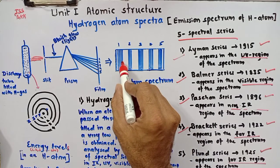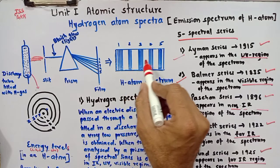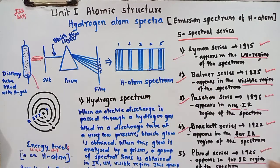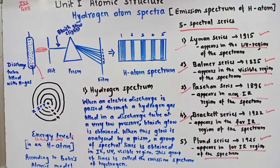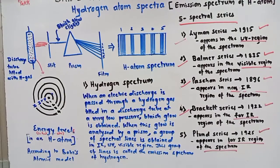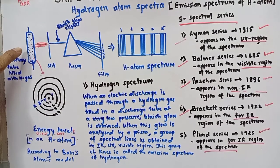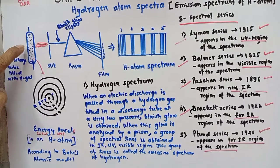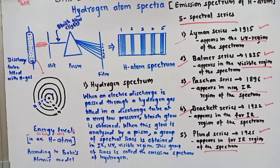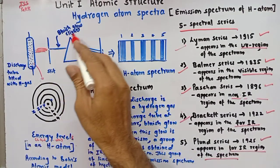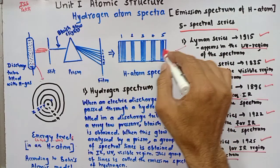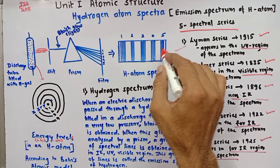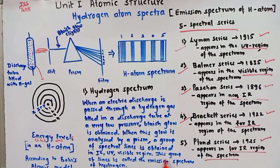Some of the spectral lines were observed in the IR region, some in the visible region, and some in the ultraviolet region of the spectrum. This group of spectral lines is called the emission spectrum of hydrogen. Whenever hydrogen gas is heated in a discharge tube, there is emission of a bluish light, and when that bluish light is analyzed or passed through the prism, there is a formation of a large number of spectral lines. These spectral lines consist of large number of groups, and this group of lines is known as the emission spectrum of hydrogen atom.